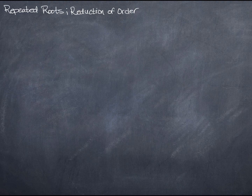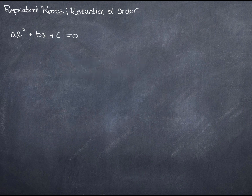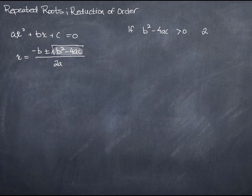We've looked at second-order homogeneous differential equations where the characteristic equation has two real solutions or two complex solutions. But what happens if there's only one real solution? Remember from algebra that such equations can be solved using the quadratic formula. Notice the piece under the square root — that's called the discriminant. If the discriminant is positive, we get two real solutions.